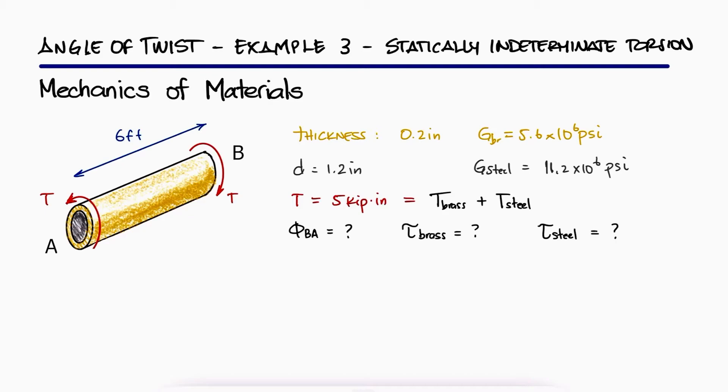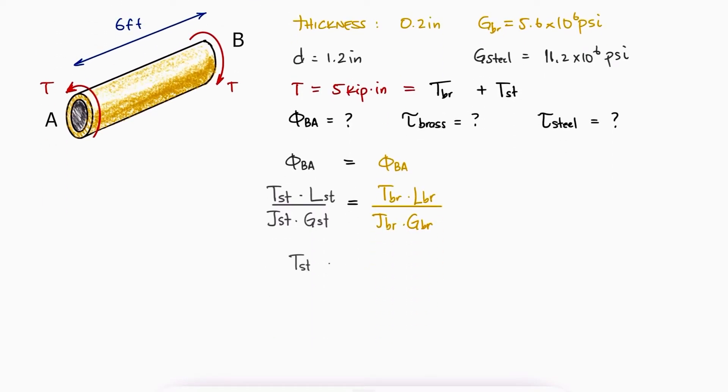Since the angle of twist of end A at the steel core has to be equal to that of A in the brass jacket, we can find, for example, the torque that goes into the steel in terms of the torque that goes into the brass. And since the length of the brass and the steel are the same, they cancel out.